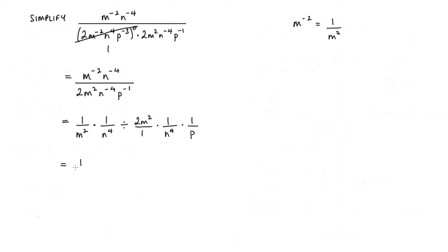So we've got 1 over m squared, times 1 over n to the power of 4. Now when we're dividing, we can actually change this to a multiplication as long as we flip the second part over here. So all of these need to be flipped over or inverted. So we get 1 over 2m squared, times n to the power of 4 over 1, times p over 1.